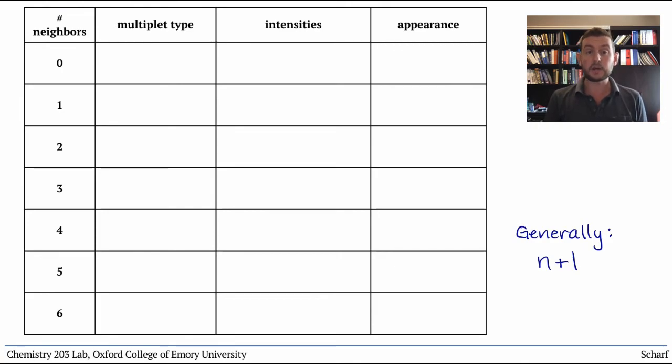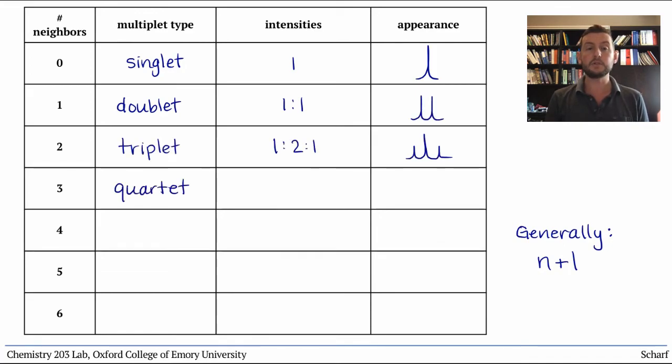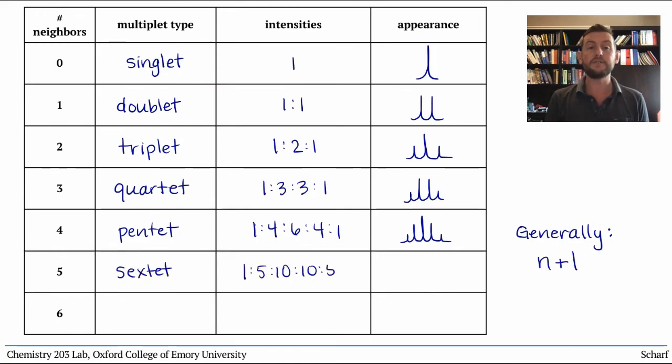So a proton with zero neighbors gives a single peak, a singlet. One neighbor leads to a doublet. Two neighbors leads to a triplet, and three neighbors to a quartet. Four neighbors gives a pentet, five peaks in a one to four to six to four to one ratio. Five neighbors gives a sextet in a one to five to ten to ten to five to one ratio. And six neighbors gives a septet with a complex ratio.